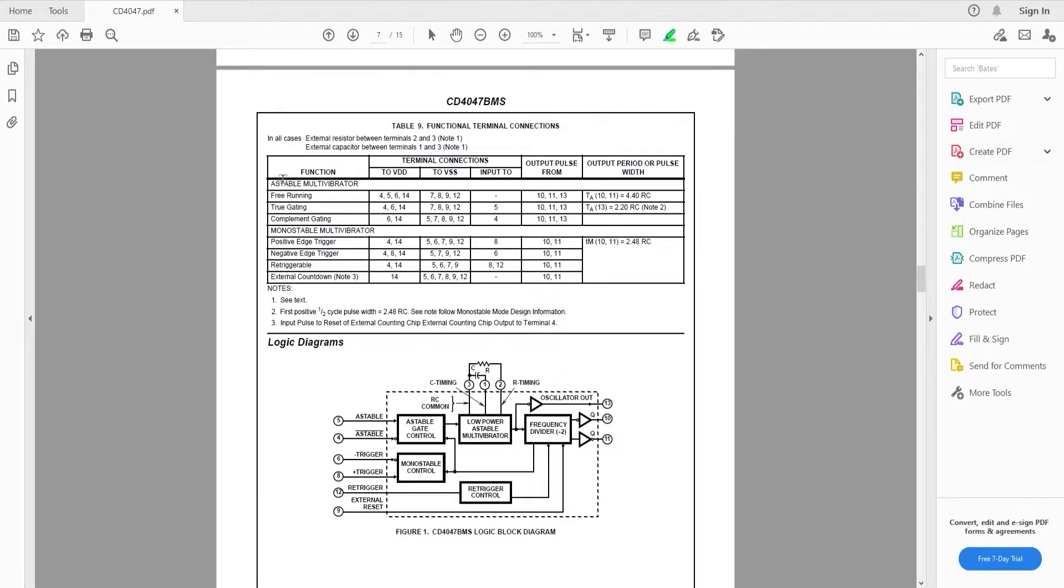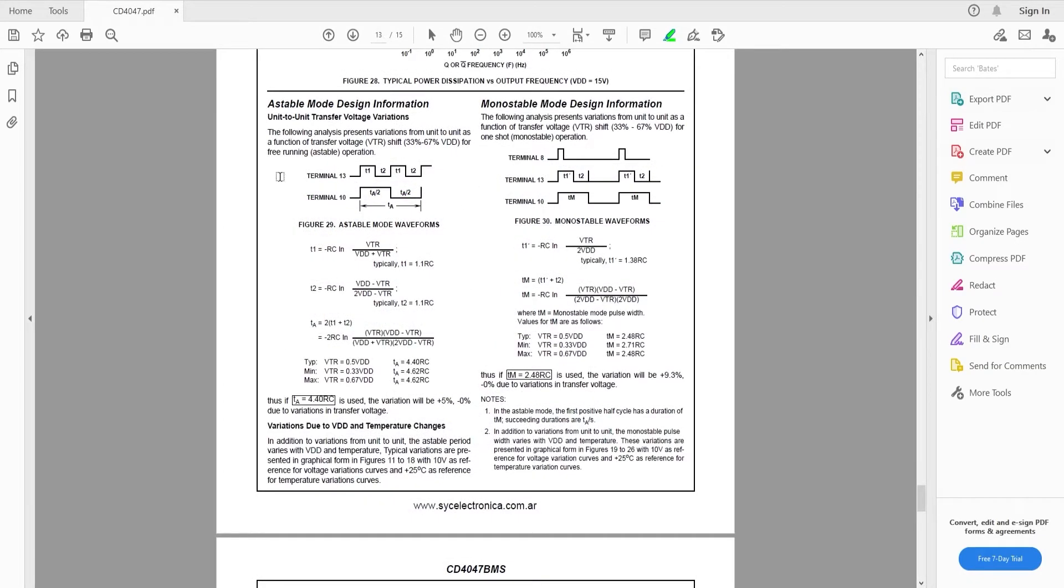Now there are multiple methods of using this chip as a multivibrator mode. The mode that we are going to use is the free running mode. So in this mode we have to connect these four pins 4, 5, 6 and 14 to VDD which is in this case 12 volt and VSS to pin 7, 8, 9 and 12.